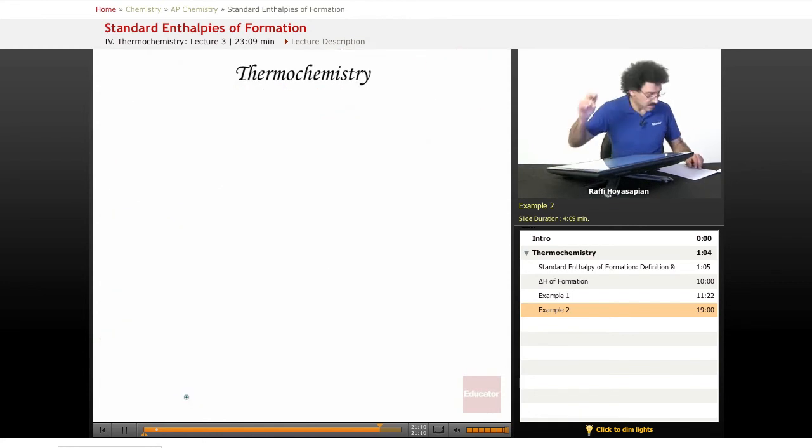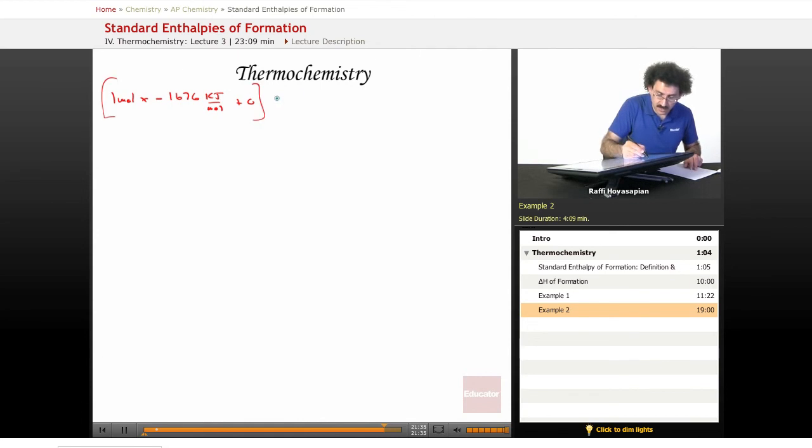So now, let us take one mole times minus 1,676 kilojoules per mole plus zero. That's the products, aluminum oxide plus the iron, minus the reactants, which is one mole times negative 826 kilojoules per mole, which is the Fe2O3 plus zero.